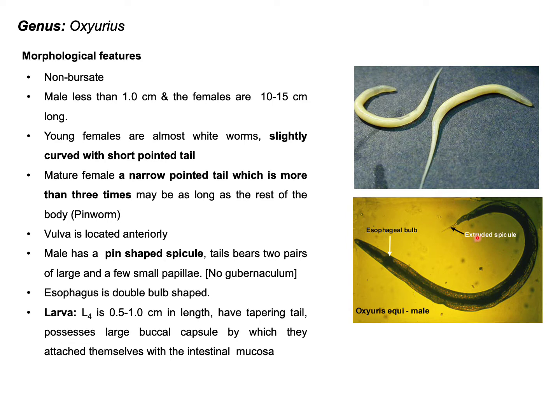For the male parasite, you can see a pointed spicule at the tail end. Another important feature is there is no gubernaculum, but the male parasite possesses two pairs of large papillae and a few small papillae. Another important feature of this parasite is that the esophagus is double-valve shaped.